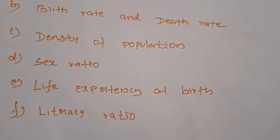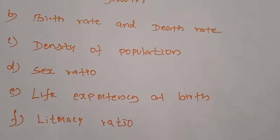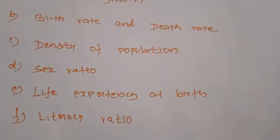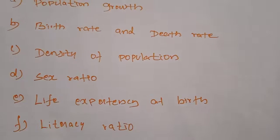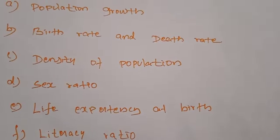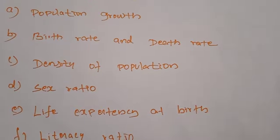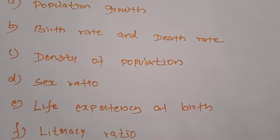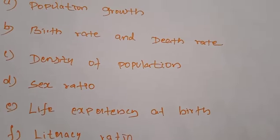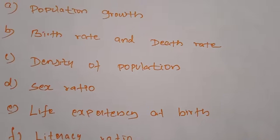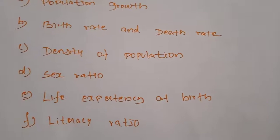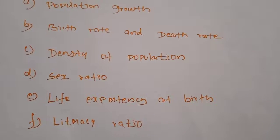Next, literacy ratio. The literacy ratio refers to the number of literates as a percentage of the total population. In 1951, only one-fourth of males and one-twelfth of females were literate. But now, 74.0% of people have achieved literacy.